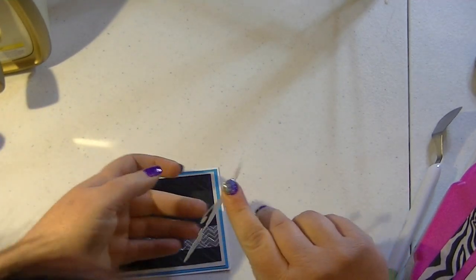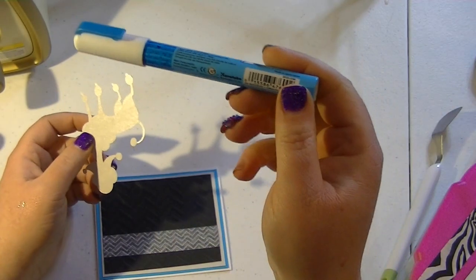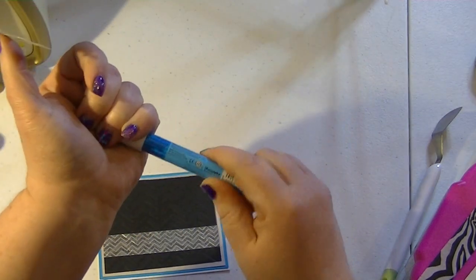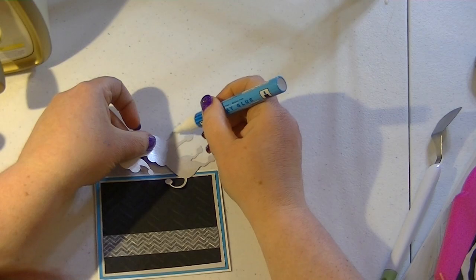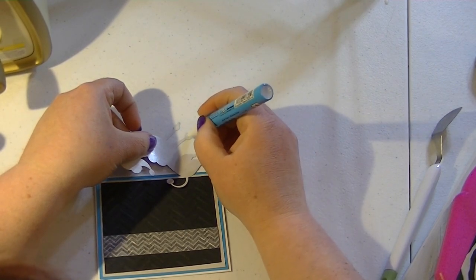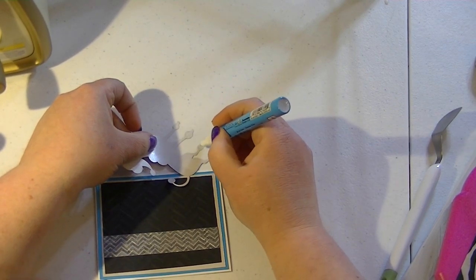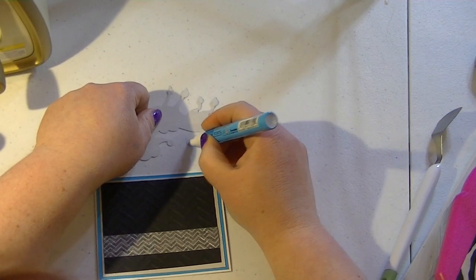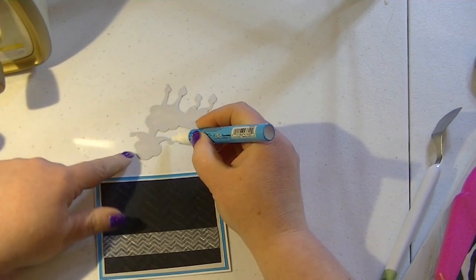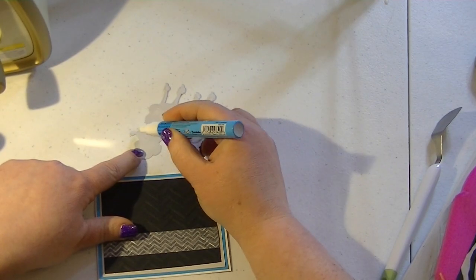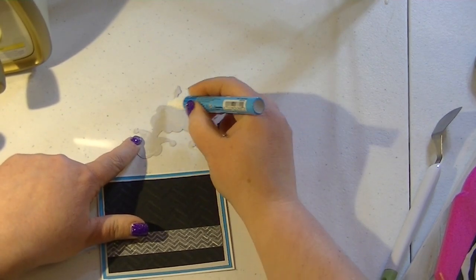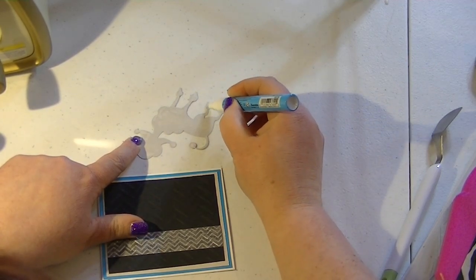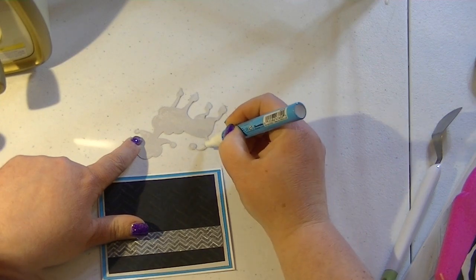Oh you know what I was going to do I forgot. This is a Zig two-way glue pen. And this is really good for small pieces. If you let the glue dry before you put it down it's going to be temporary or repositionable. If you put it down while the glue is still wet - and the glue is wet when it's still blue - so I always go back over and just touch the pieces that I've already done.